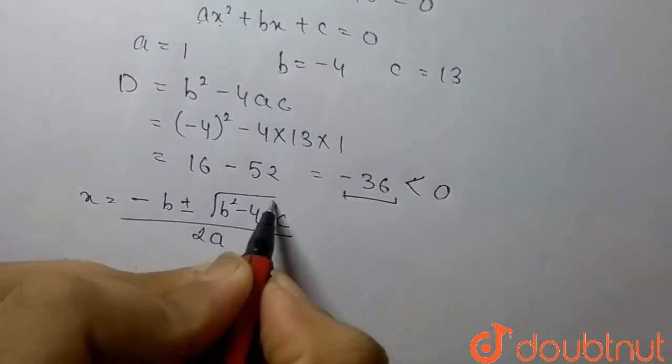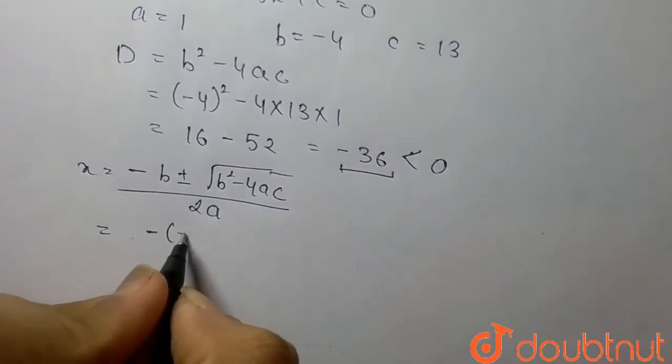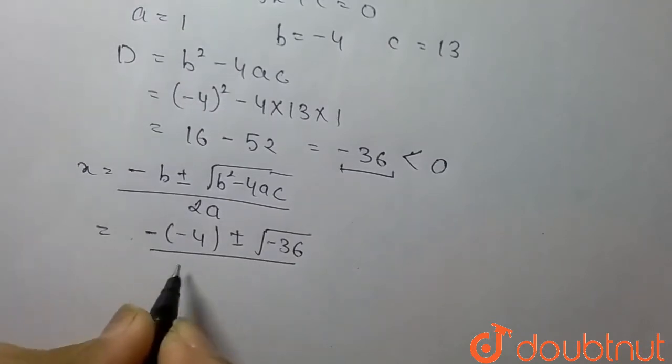And we can put the value so we get minus of minus 4 plus minus and the value of this is minus 36 upon 2 into 1.